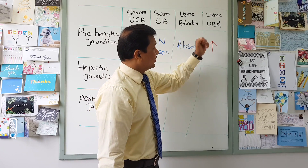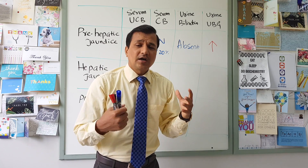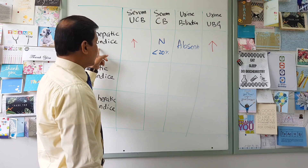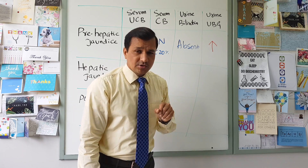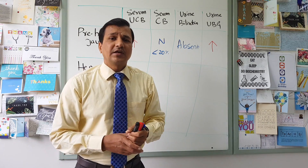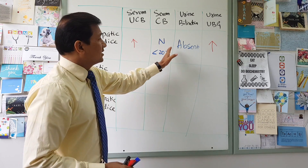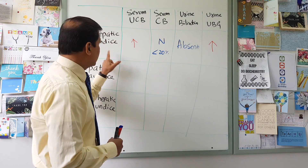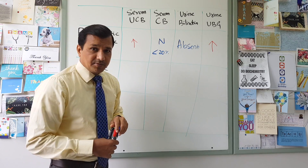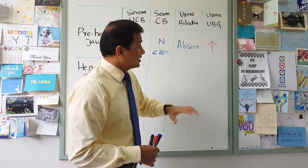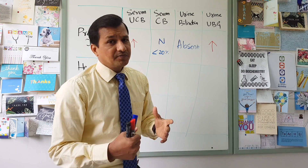The increased urobilinogen in the urine and increased urobilinogen (stercobilinogen) in the feces makes both urine color and stool color darker in pre-hepatic jaundice. To summarize: serum unconjugated bilirubin is elevated, serum conjugated bilirubin is normal, urine bilirubin is absent, and urine urobilinogen is increased — along with stool urobilinogen also increased.